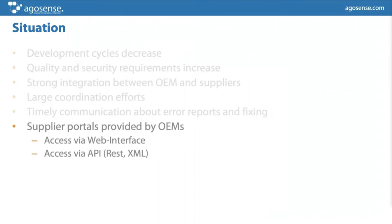Communication should be really timely regarding error reports and error fixing. Last but not least, OEMs usually provide their supplier portals to their suppliers, meaning suppliers have to care about how they access the OEM system, how they manage the data formats they receive and must deliver — and all that complexity is what we take over with the Symphony platform.